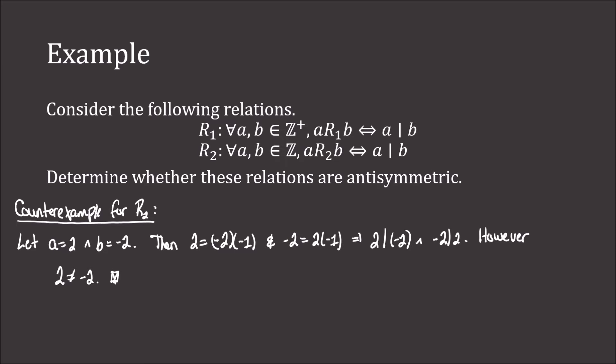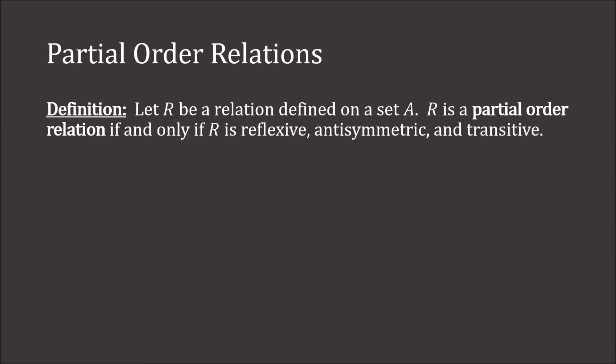We now define a partial order relation. Let R be a relation defined on some set A. R is a partial order relation if and only if R is reflexive, anti-symmetric, and transitive. Recall that an equivalence relation is reflexive, symmetric, and transitive. Partial order relations are very similar, except that instead of being symmetric, the relation must be anti-symmetric.